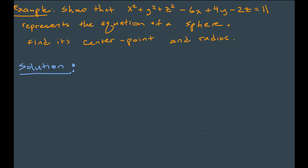In this example: show that the equation X squared plus Y squared plus Z squared minus 6X plus 4Y minus 2Z equals 11 represents a sphere, and find its center and radius. Comparing to the sphere equation, we don't have perfect squares — we have X squared and 6X, Y squared and 4Y, Z squared and negative 2Z. So we need to complete the square for X, Y, and Z.